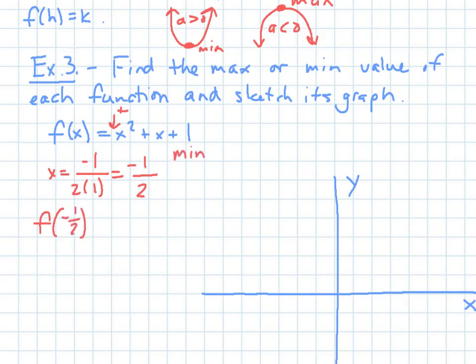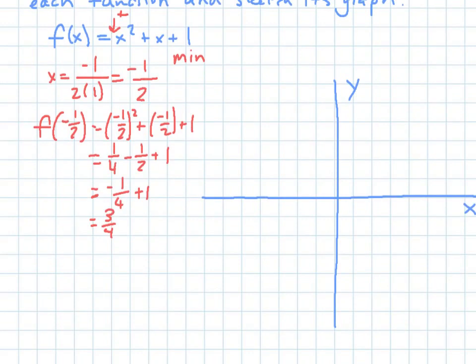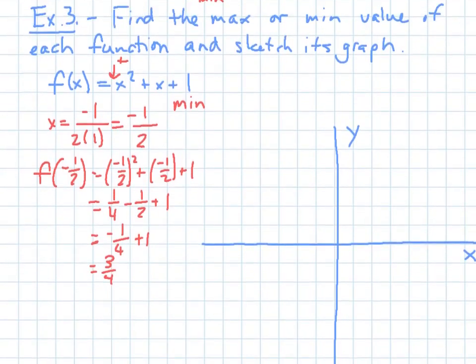So plug in negative 1 half. So that gives me 1 fourth minus 1 half plus 1. So that gives me negative 1 fourth plus 1, which is 3 fourths. So there's your vertex, and your minimum. So your minimum is 3 fourths. That's the smallest it's going to be.